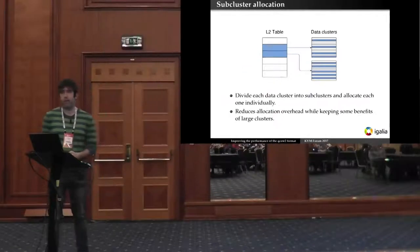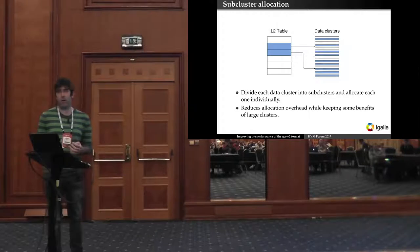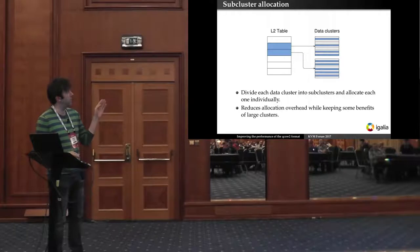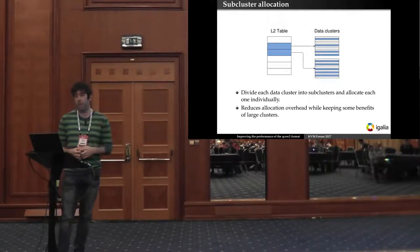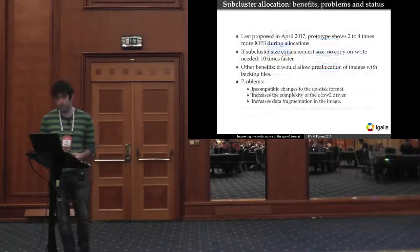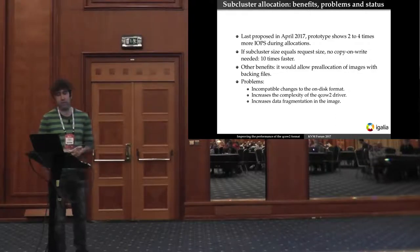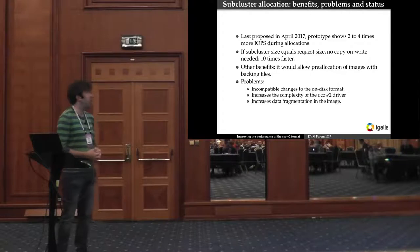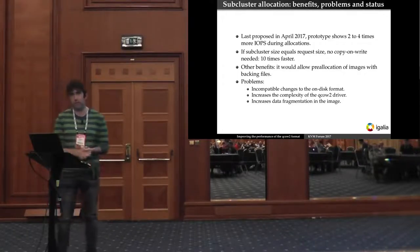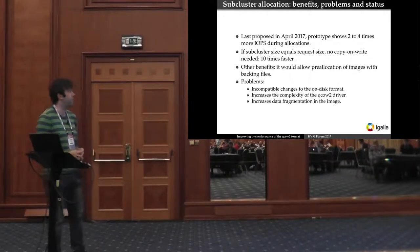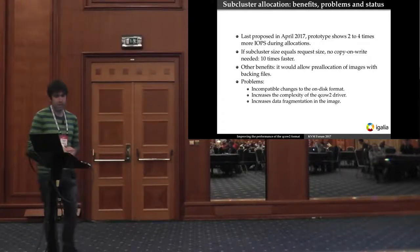Another way to make allocation faster is not to allocate the whole clusters at the same time. We could divide the cluster into sub-clusters and each time we do allocation we only allocate one of the sub-clusters. In order to do that we would need to update the L2 table entries so they would store a bitmap that would indicate which one of the sub-clusters are allocated. This would reduce the allocation overhead while keeping some of the benefits of having large clusters. The status of this is that this was proposed in April. My prototype shows two to four times more IO operations per second during allocations. If you actually adjust the sub-cluster size so it's equal to the request size, for example, you can adjust it to the host file system block, then there's no copy-on-write at all, and the results are much faster.